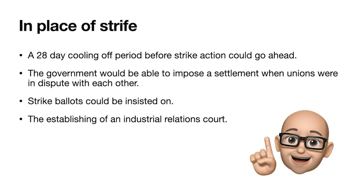Barbara Castle's proposals include: a 28-day cooling-off period before strike action could go ahead; a ballot would take place, and depending on the result, an employer might change their offer to avoid a strike; the government can impose a settlement where unions are in dispute with each other; strike ballots would be insisted on — removing the threat of wildcat strikes, giving employers some warning that a strike is about to take place; and it also establishes an industrial relations court.